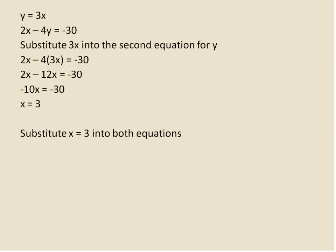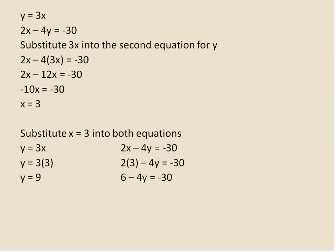Now I'm going to plug the value of x into both equations and see if it matches up. For the first equation: y equals 3 times 3, so y equals 9. For the second equation: 2 times 3 minus 4y equals negative 30. 2 times 3 is 6. Subtracting 6 from both sides and then dividing both sides by negative 4, I see that y is equal to 9. So the solution for this system is x equals 3 and y equals 9 — that's the point where these two lines cross.